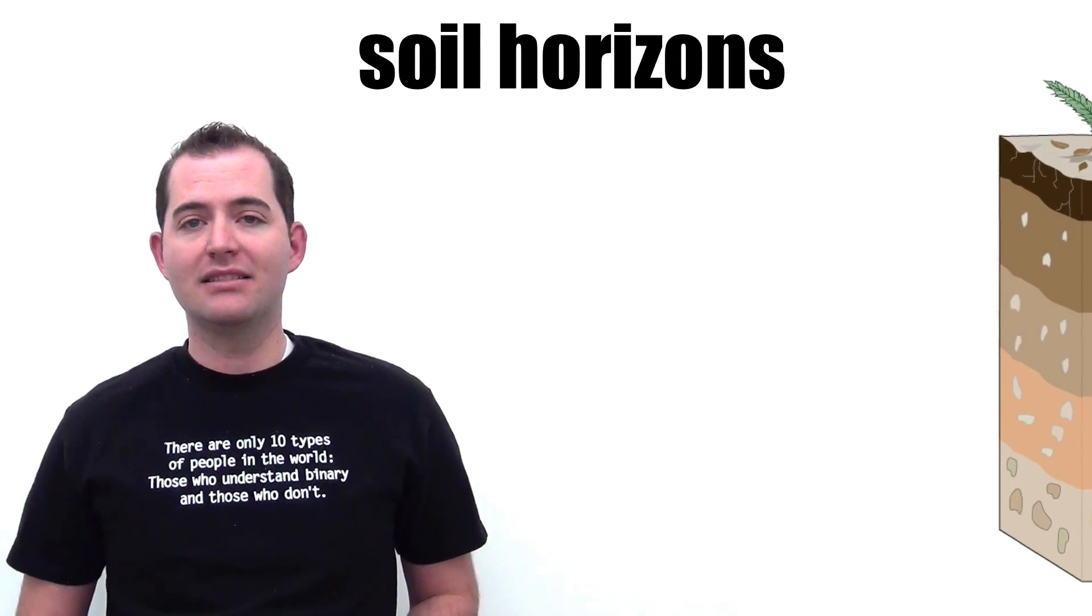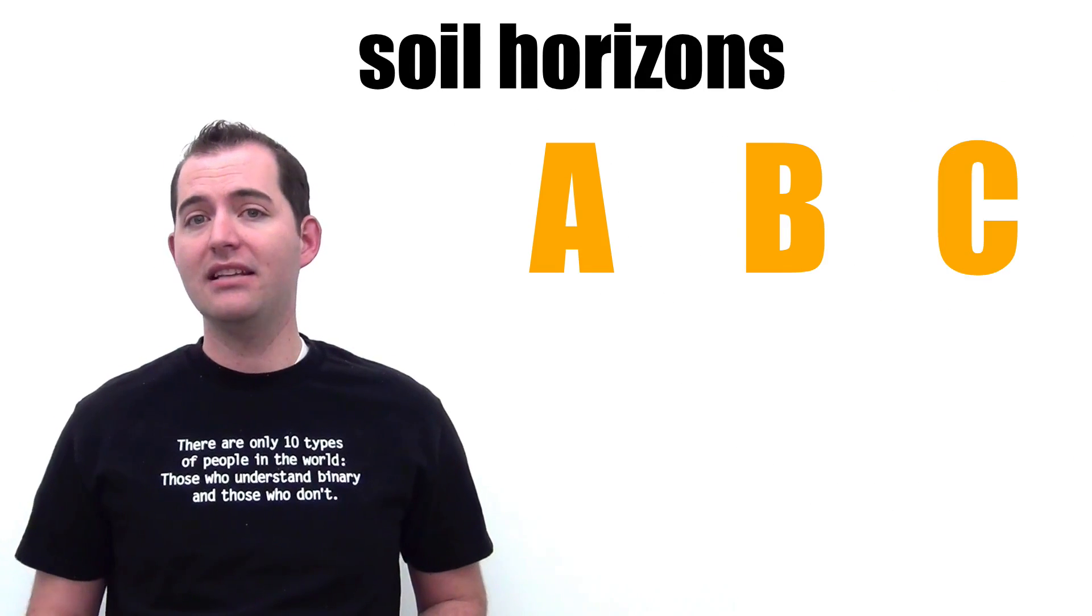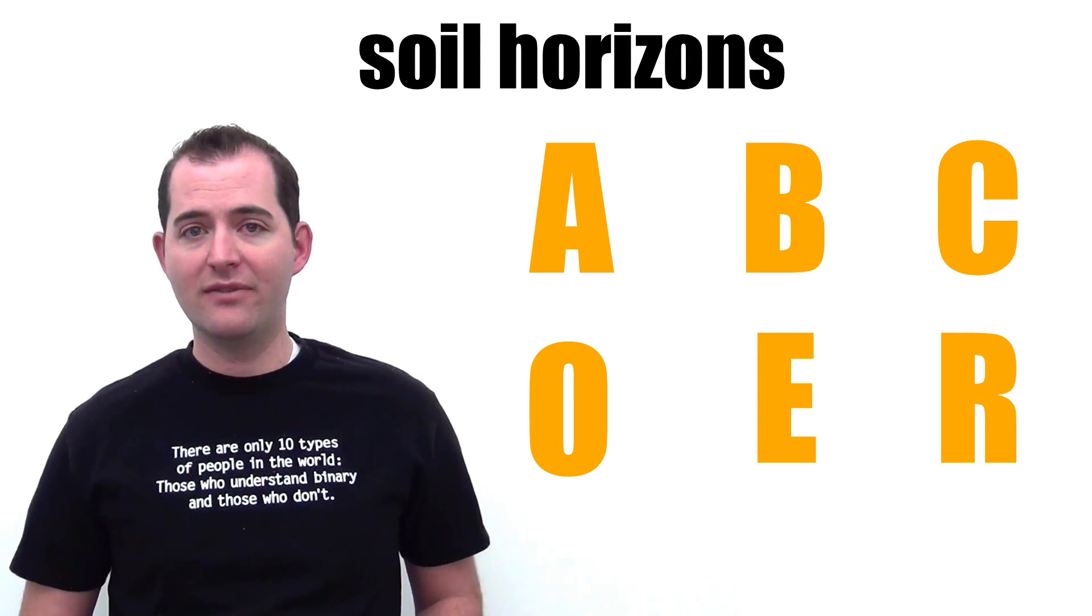There are a few major horizons that are typically classified. These are A, B, C, O, E, and R horizons. We'll look at each of these individually.